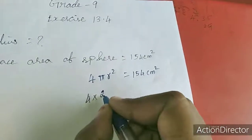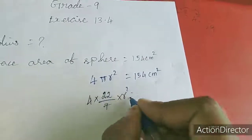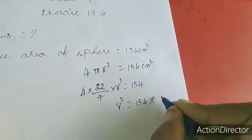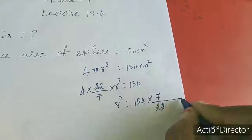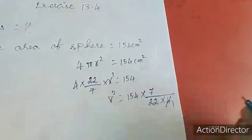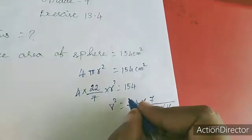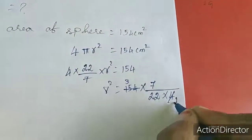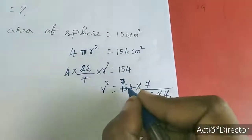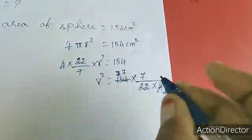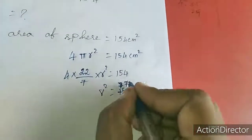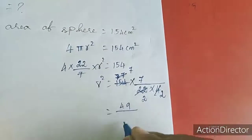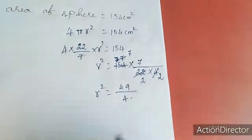Substituting π = 22/7, we get 4 × (22/7) × r² = 154. Keeping r² on one side, r² = 154 × (7/22) × (1/4). Simplifying: 154 × 7 = 1078, divided by 88 gives 49/4. So r² = 49/4.